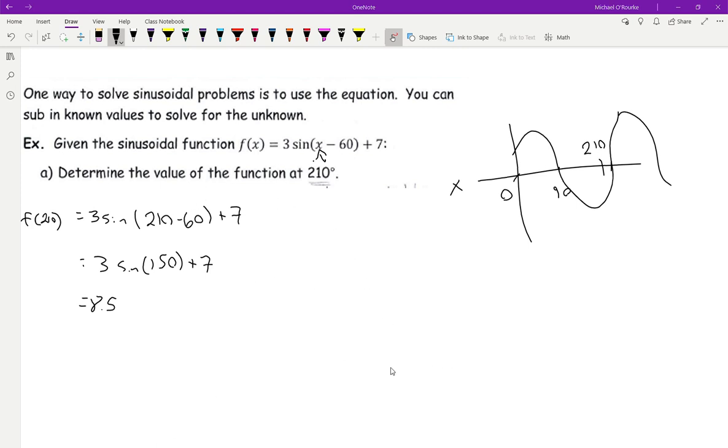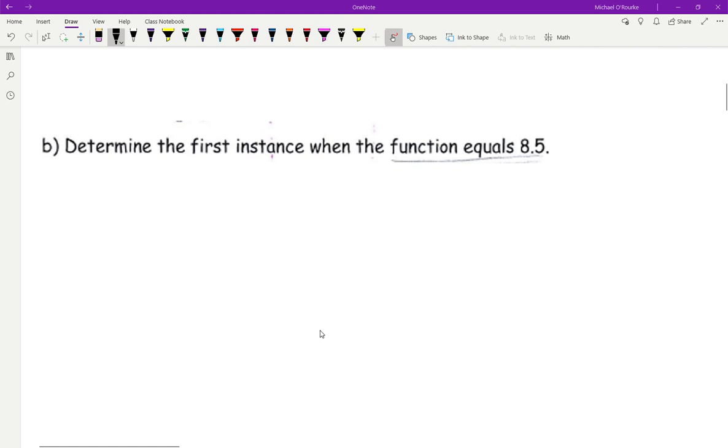For this one, I would do sine 150 first. So I go 150, press my sine button, then multiply it by 3, press equals and then plus 7.